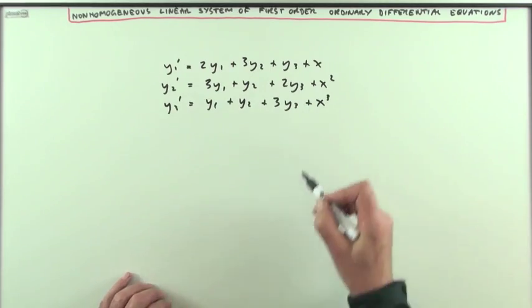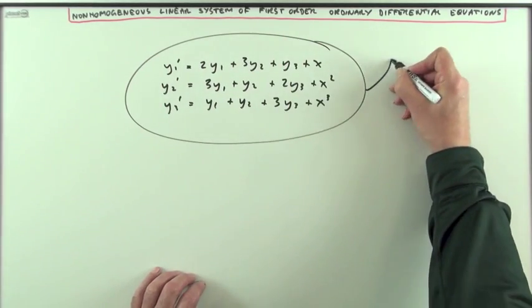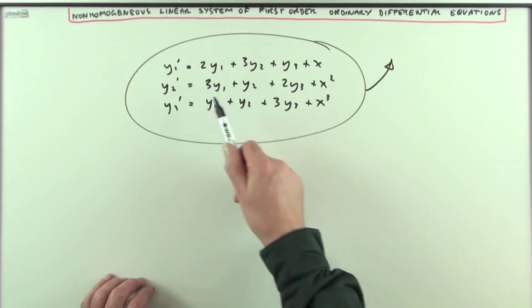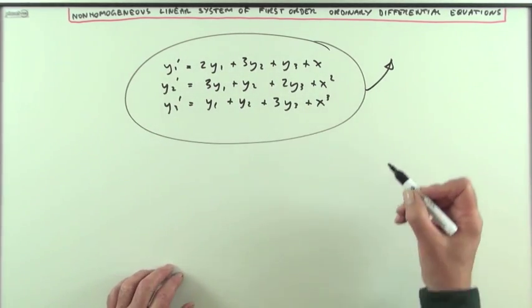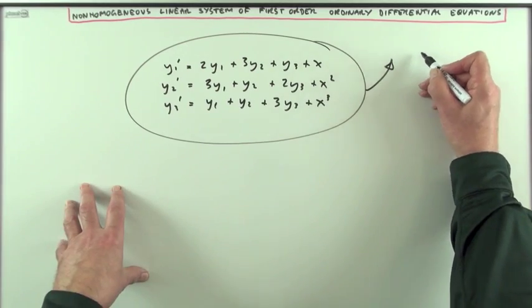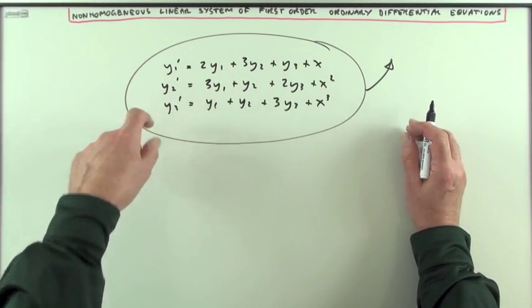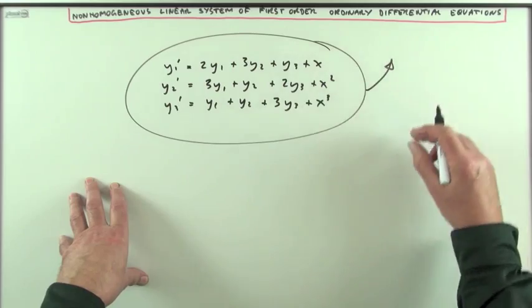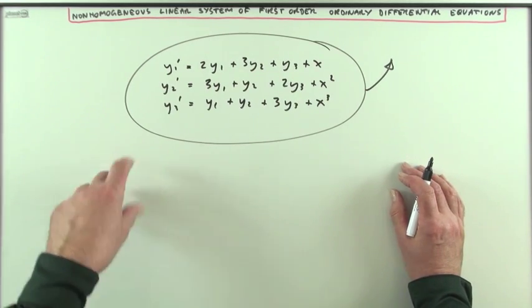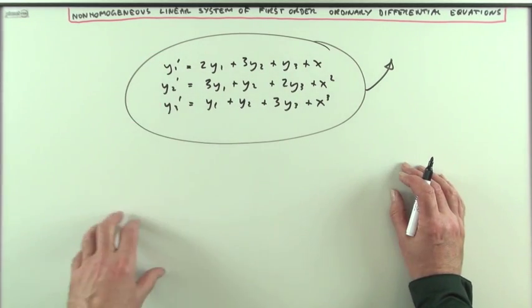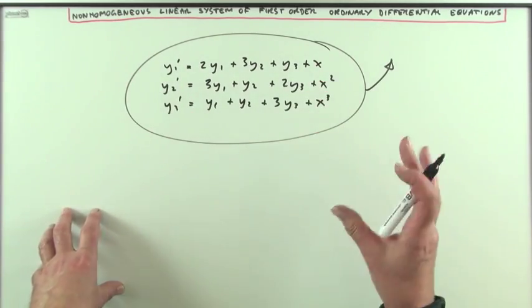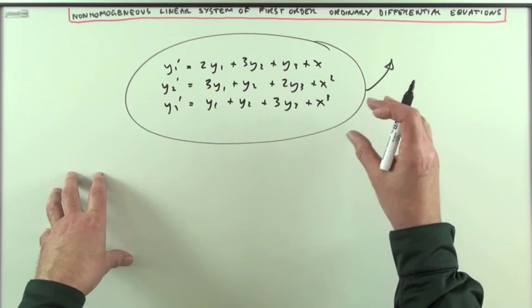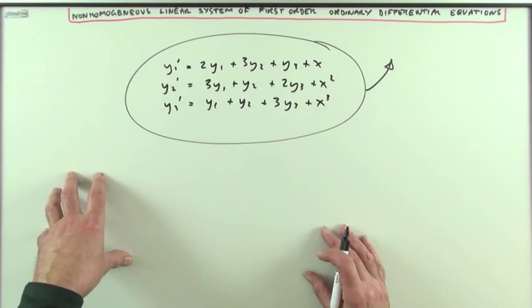Now there are two routes. You can either take the system and by differentiating and combining them, form a higher order equation. With three of these you could form a third order ODE in terms of just one of the functions and then substitute it back in, or you may be lucky with these coefficients and might need only to go to a second order one.